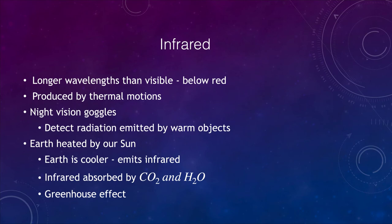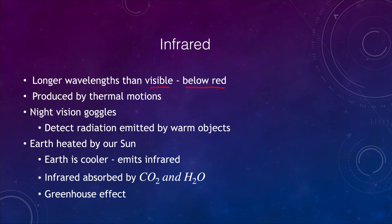As we move through the electromagnetic spectrum, the next thing is infrared. These are longer wavelengths than visible light, below the red end, and are generally produced by thermal motions. Things warmed to a certain temperature emit thermal infrared radiation. Night vision goggles detect this radiation emitted by warm objects — a human body emits infrared radiation. If you turn off all the lights in a darkened room, you disappear to our eyes because our eyes are not sensitive to the infrared light we give off; we normally see each other only by reflected visible light.